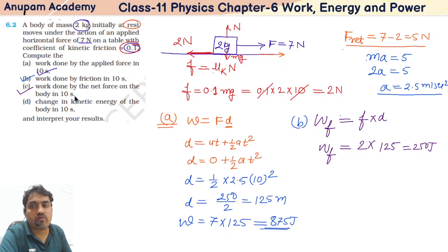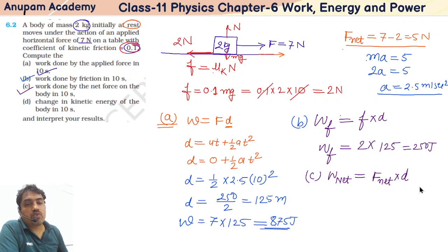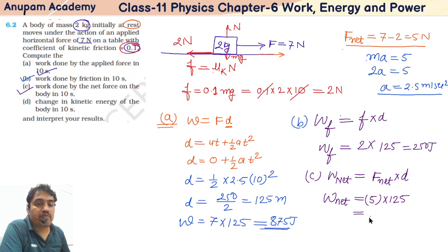Part C: work done by the net force on the body in 10 seconds. Work done by net force equals net force into displacement. The concept here is that when talking about work done, we have to define which force we're finding work for. So it's 5 into 125, which equals 625 Joules.